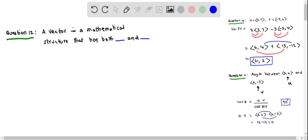Let us answer question 12: A vector is a mathematical structure that has both direction and magnitude. We have been given a few options, and the correct option is direction and magnitude.